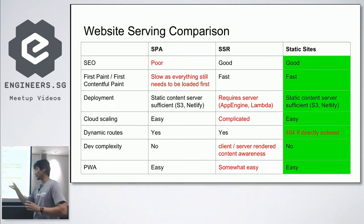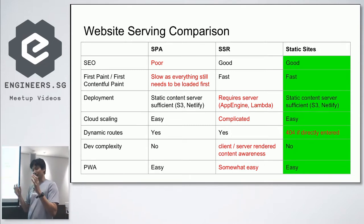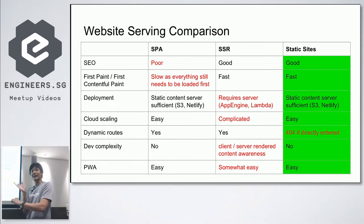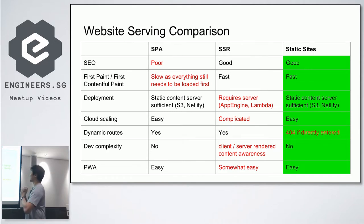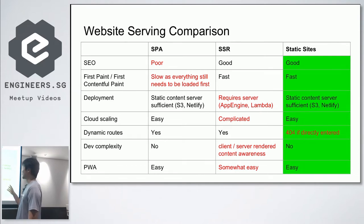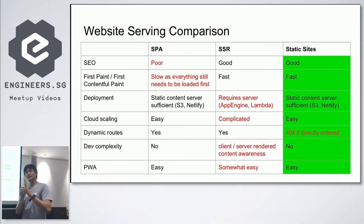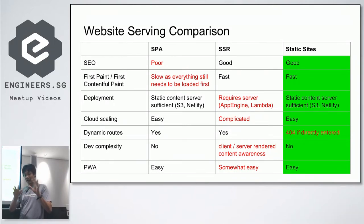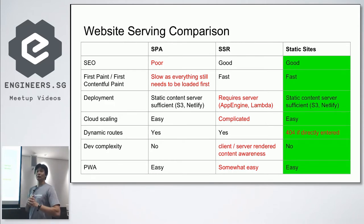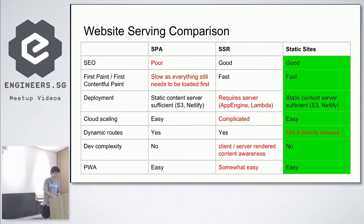There's also complexity with server-side rendering: you need to know when something is rendered on the server and when it's rendered on the client. If there's a mismatch, very bad things can happen to your application. As for static sites, there are a lot of positives, but the one drawback is dynamic routes — for example a slash-username route. If you type that directly in the browser you'll get a 404 error, which is a tradeoff you need to account for.